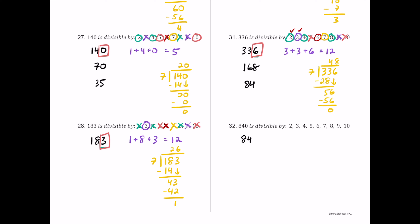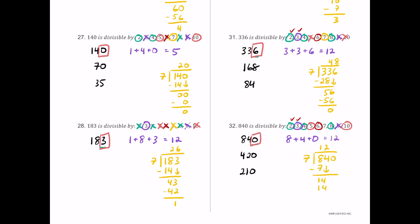For number 32, we have 840. It ends in 0, so 2 works. Half is 420 — still even — so 4 works. Half of 420 is 210 — still even — so 8 works. The digit sum 8 plus 4 plus 0 is 12, a multiple of 3 but not 9. It ends in 0, so 5 and 10 work. Since 2 and 3 both check out, 6 works. For 7: 840 divided by 7 is exactly 120 with no remainder, so 7 works as well.